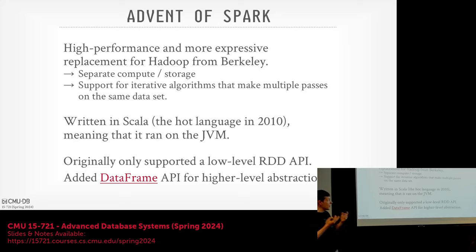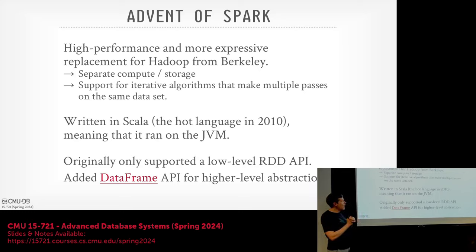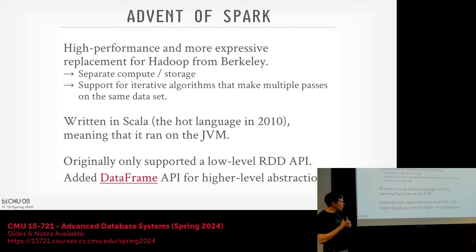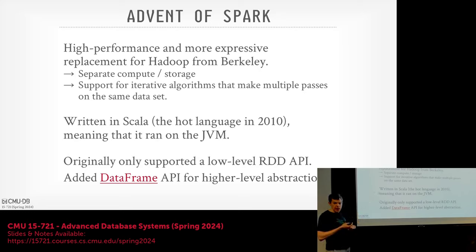Some parts were very similar to Hadoop, like separating compute and storage — Hadoop had HDFS and executor nodes. But Spark also added support for iterative algorithms, allowing multiple passes on the same dataset within a program. Spark was written in Scala because that was the hot language around 2010. Now it's obviously Rust; before that it was Go, before Go it was Scala.